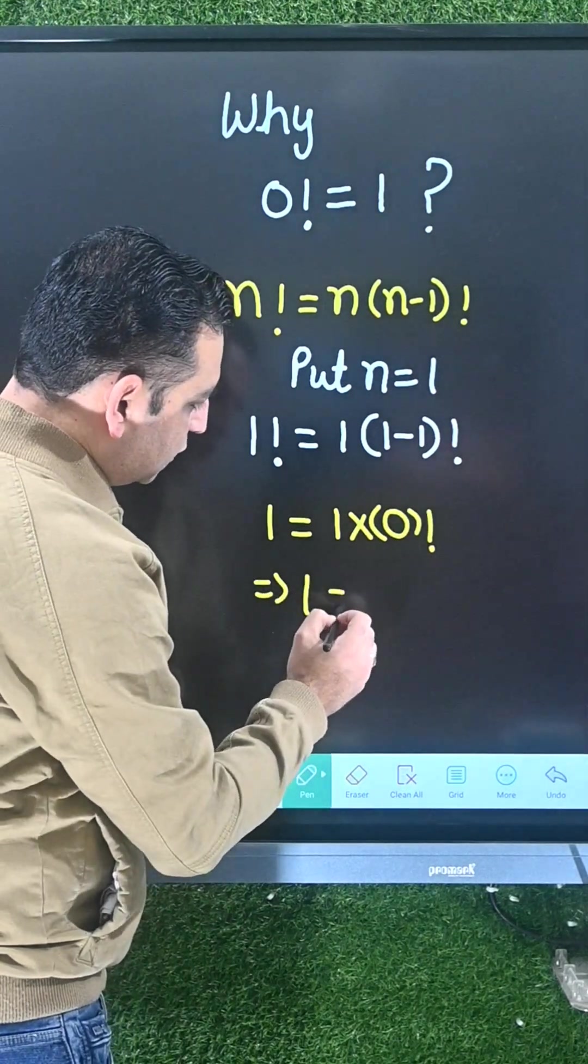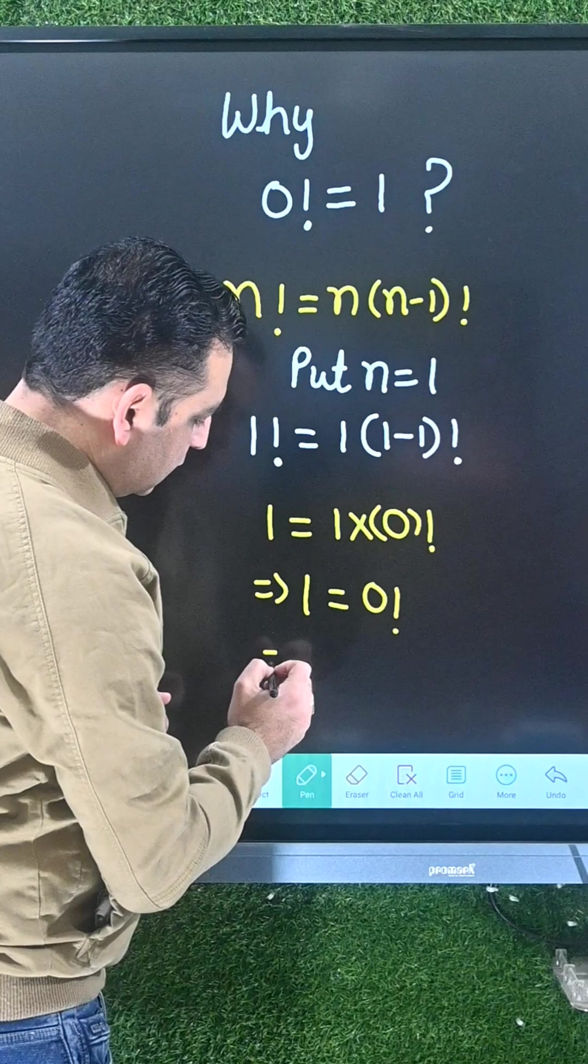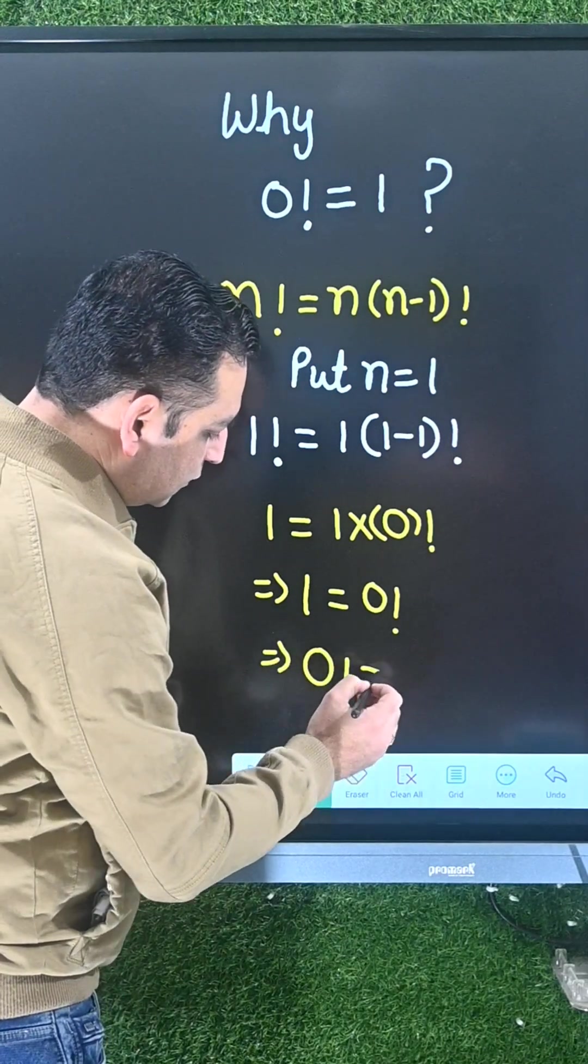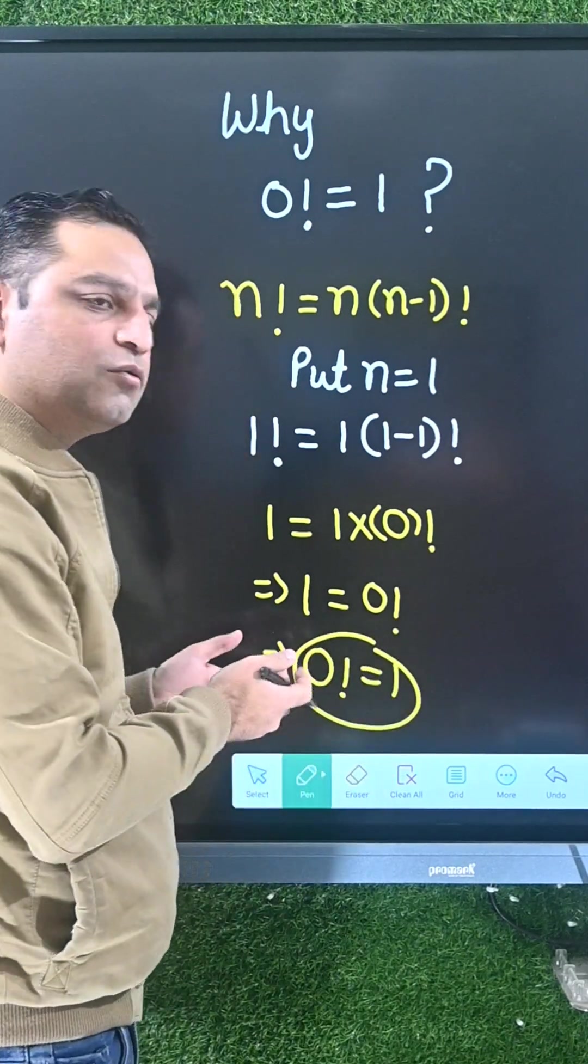See what we are getting: 1 is equal to 0 factorial. Hence we can say 0 factorial is equal to 1.